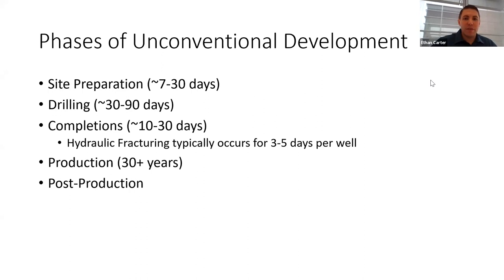To start, the phases of unconventional development — I want to emphasize throughout that the unconventional space is highly variable, with many aspects that can change significantly, including these timelines. What really distinguishes unconventional from conventional development is what goes on in the subsurface: horizontal drilling combined with hydraulic fracturing to unlock shale formations. That's what we mean by unconventional development. Today I won't focus on the subsurface differences, but know that horizontal drilling with hydraulic fracturing is what typically distinguishes it from conventional vertical well production.